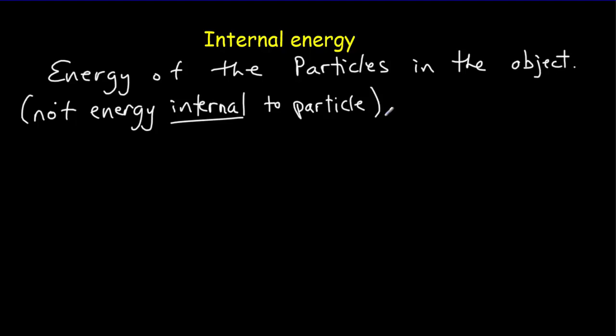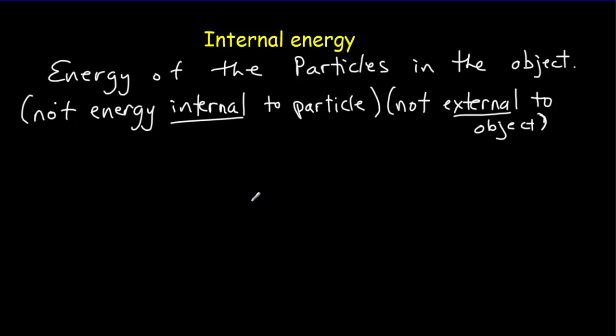We're also not talking about energy that's external to the object itself. For instance, if I take my object and throw it, that object as a whole would have kinetic energy — but we're not talking about that, because it would be an external energy. When we talk about energy, there are two fundamental types: kinetic energy and potential energy. The kinetic energy of the particles would be their vibrational motion, perhaps their rotational motion, and in a gas, their translational motion.